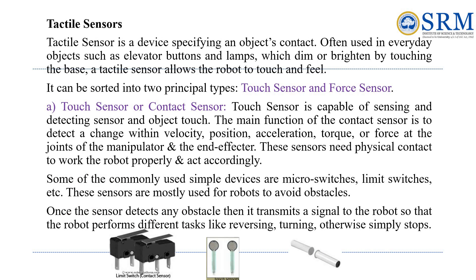Tactile sensors are like a robot's sense of touch, allowing it to feel things it comes into contact with. There are two main types: touch sensors and force sensors. Touch sensors detect when something makes contact with them, helping robots detect changes in speed, position, force, and more at their joints and end parts. When an obstacle is sensed, a signal is sent to the robot, which then responds by moving in reverse, turning, or stopping. Micro switches and limit switches are commonly used for this purpose.